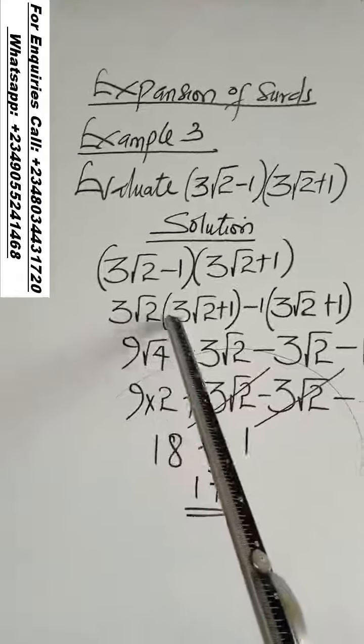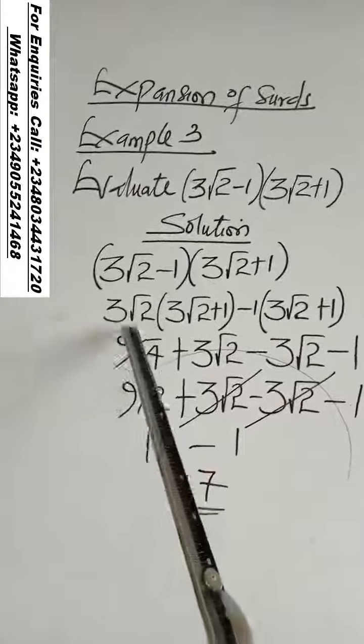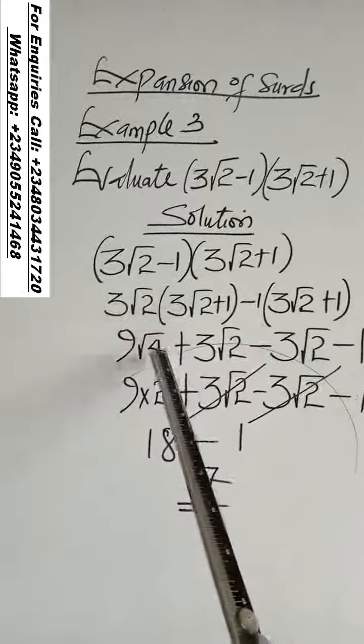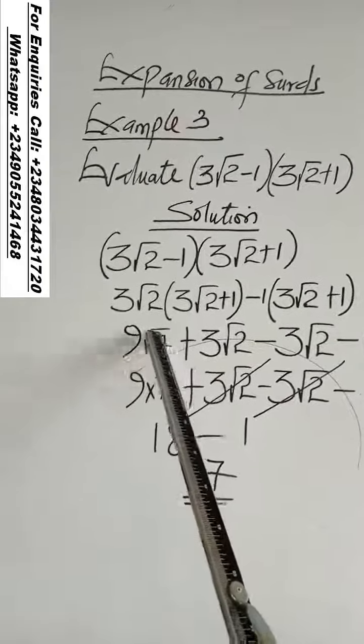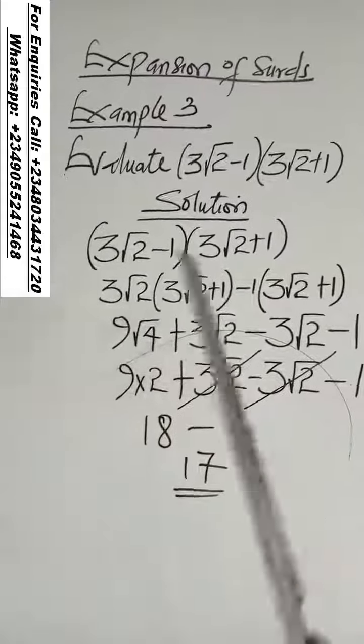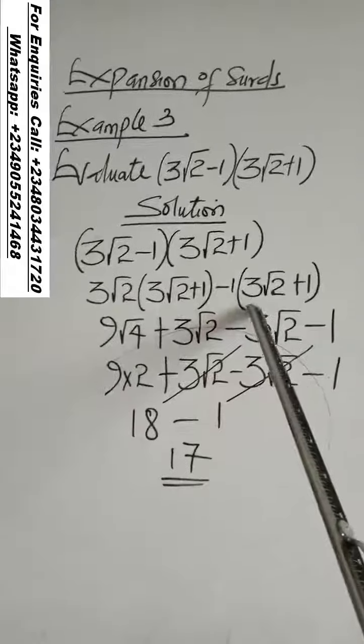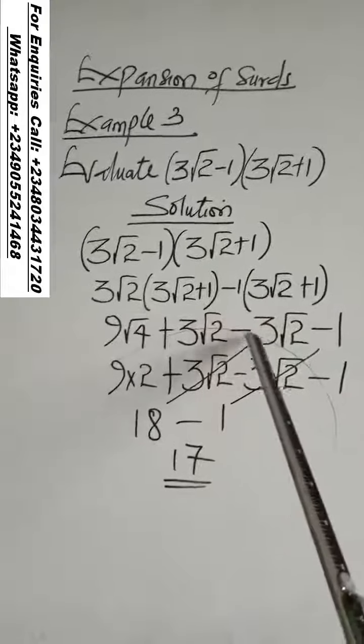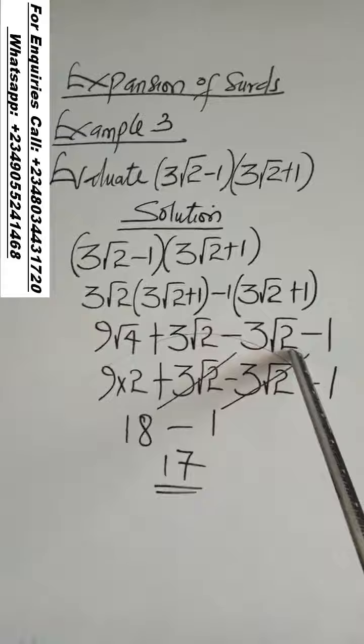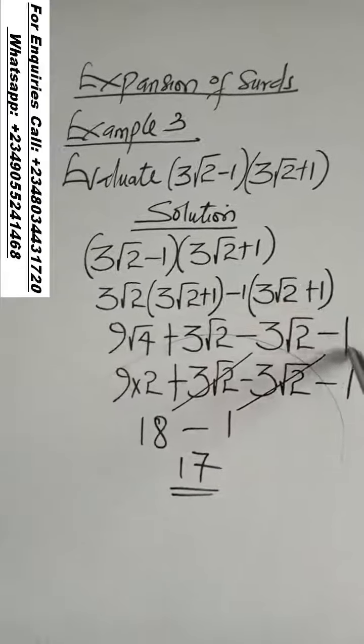3√2 times 3√2. Rational times rational, 9. Irrational times irrational, √4. 3√2 times 1, 3√2. Anything times 1 is that thing. Minus 1 times 3√2 will give you minus 3√2. Anything times 1 is that thing. Minus 1 times 1, minus 1.